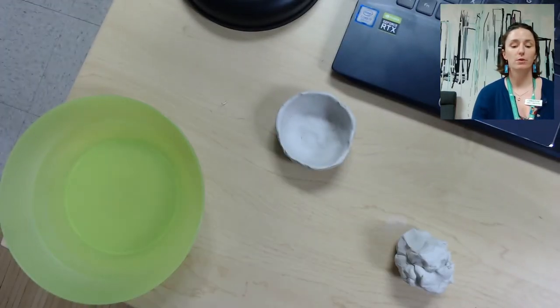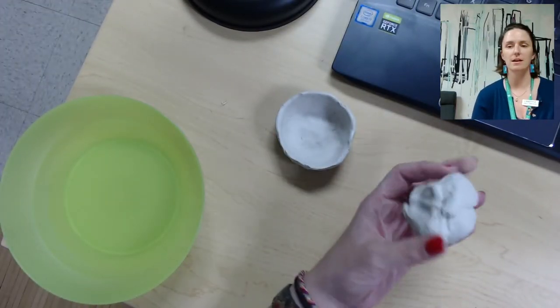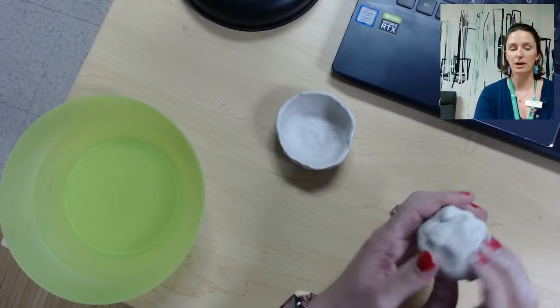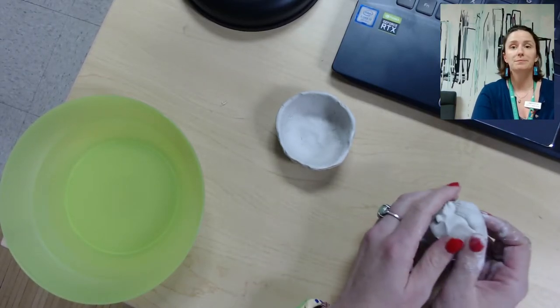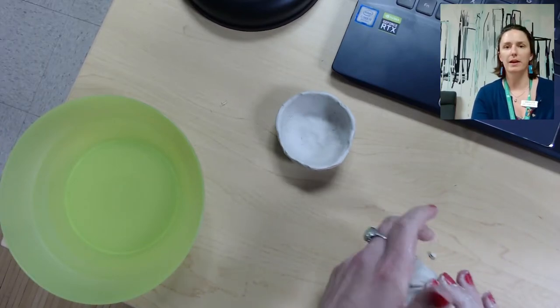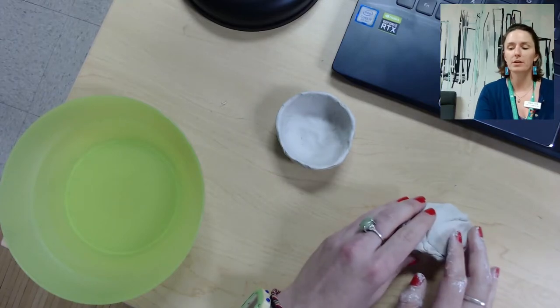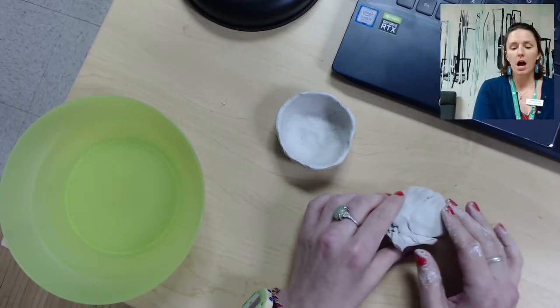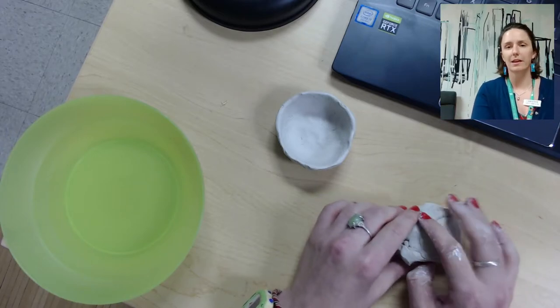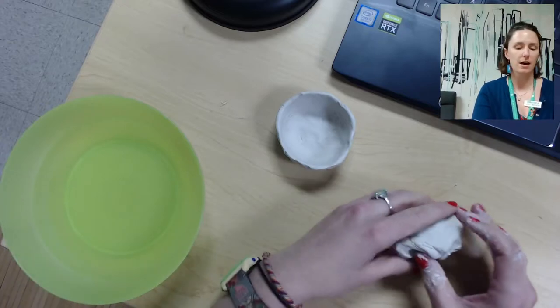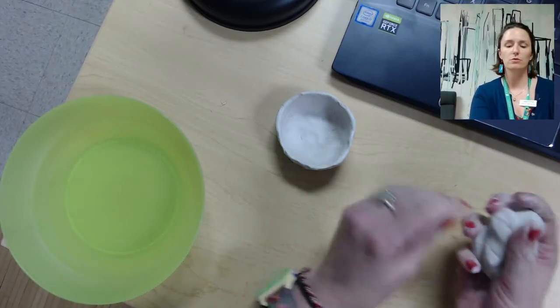This month we're going to be making a clay pinch pot, so it will look something like this. What you'll need in your kit: you should have a ball of clay. This is natural clay so it will air dry. You'll need the Mod Podge, which is just the white glue in the container, and a paintbrush. And that's it. Oh, you will need also a cup of water or a bowl of water, just some sort of access to water when you're using the clay.